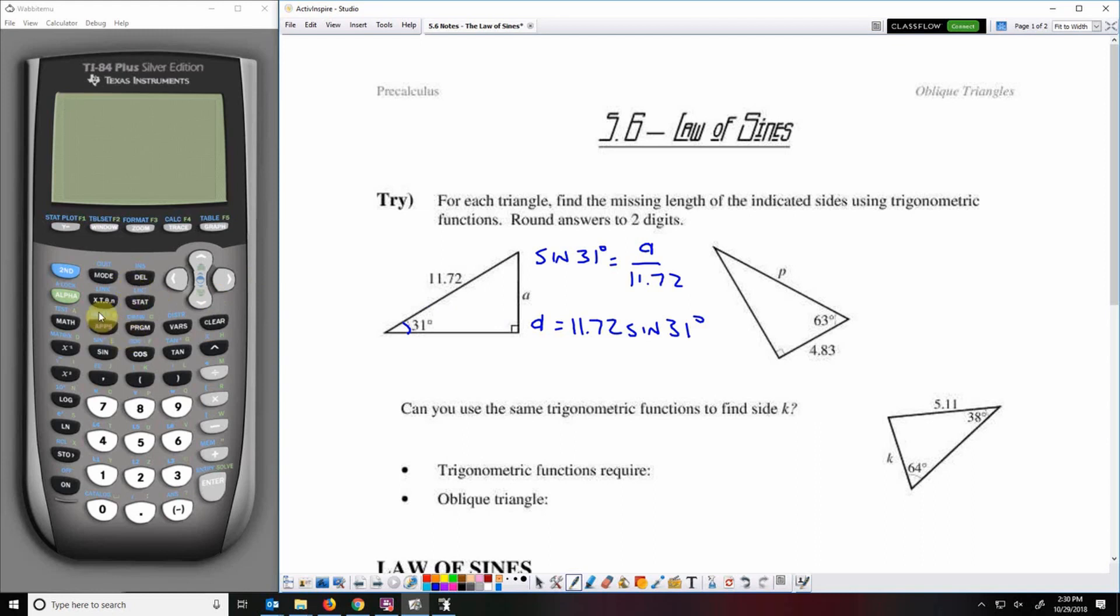So we're going to check our mode here, make sure that we're in degrees, and then we can type in 11.72 times sine 31. And we get 6.036 so rounded to the nearest two decimal places, we get 6.04.